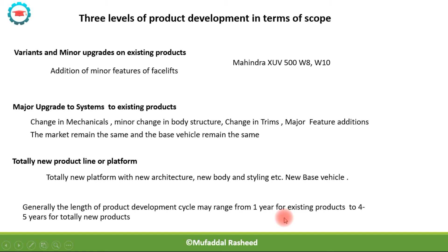Generally, the product development effort for minor upgrades would take around one to two years, but for a totally new product line it can go beyond five years. A very common practice followed today is the standardization or commonization of parts and systems, which saves time and cost of product development and allows cross-deployment of systems or components across products and platforms.